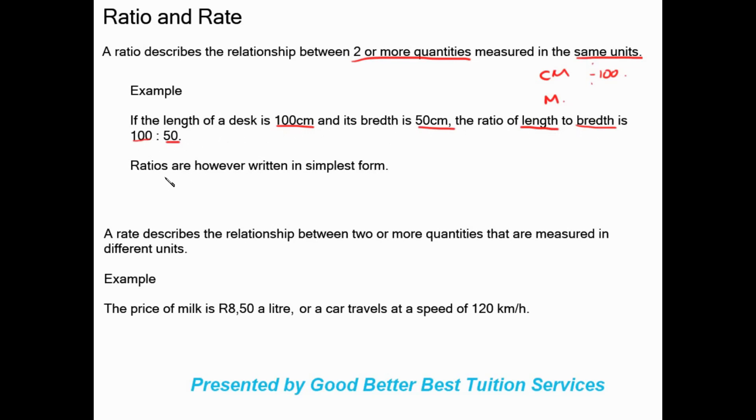But ratios are however written in simplest form. We have 100 is to 50. How are we going to turn that into its simplest form? Straight away, highest common factor we can look at. The highest common factor between 100 and 50 is 50. We can see 50 goes into 100 twice and 50 goes into 50 once. Our simplest form ratio gives us 2 is to 1.